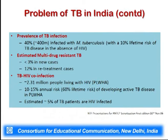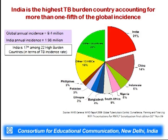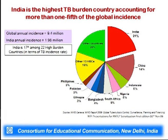About 2.31 million people living with HIV have been reported with tuberculosis, making this combination deadly and lethal. According to a WHO pie chart, India accounts for one-fifth of global TB incidences — about 21 percent — followed by China at 14 percent, Indonesia at 6 percent, and Nigeria at 5 percent. The global annual incidence of tuberculosis is about 9.4 million, while India's annual incidence is about 1.96 million, making India one of the 17 most highly burdened countries out of 22.